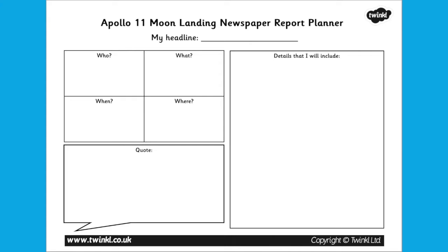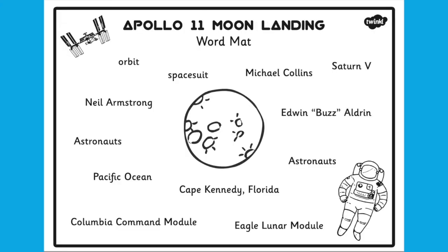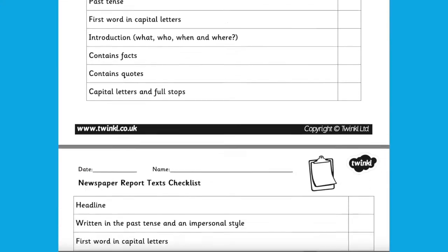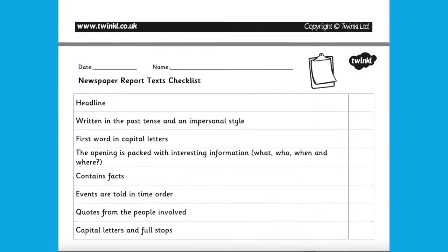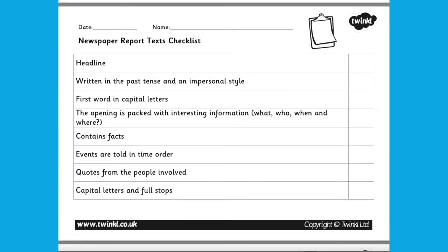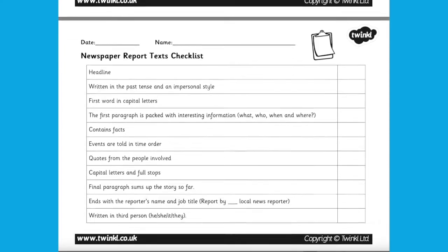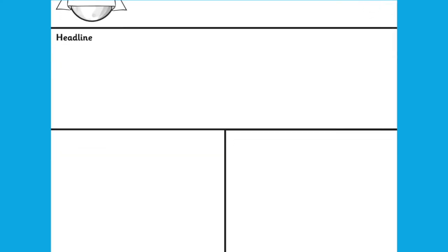They must create a newspaper report on the moon landing as though they saw it themselves. A planning sheet, writing template, and a word map have also been provided to make this easier, as well as a checklist for self-evaluation. This task will help your child to develop their creative writing skills as well as their abilities to plan and map out their work.